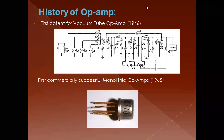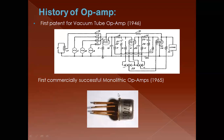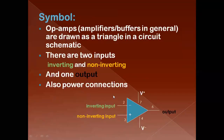In 1946, the first patent for a vacuum tube op-amp was developed. In the early days, vacuum tubes were used to construct op-amps. After the development of transistors, the monolithic IC was developed in 1965. Monolithic means all the components are fabricated on a single silicon chip.